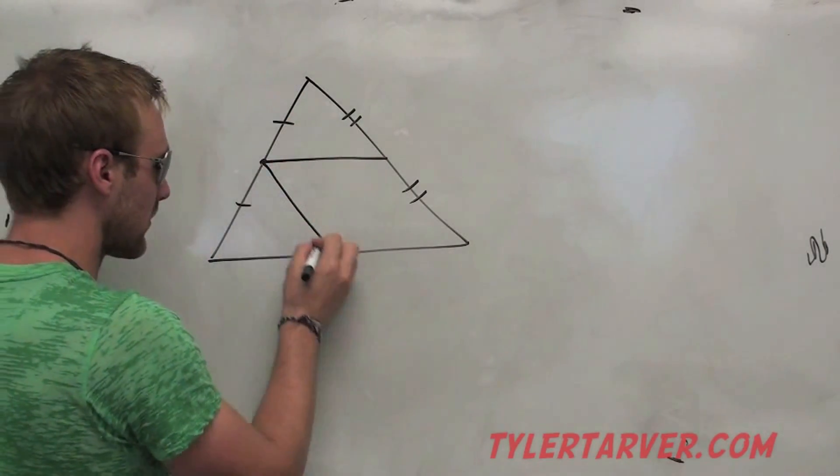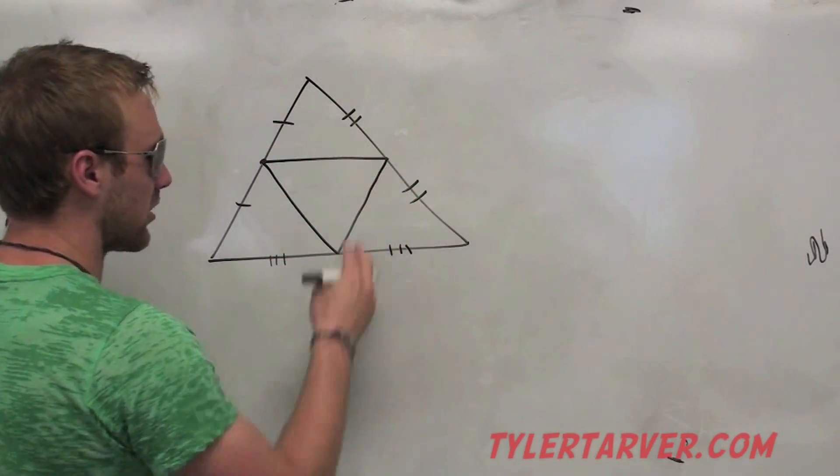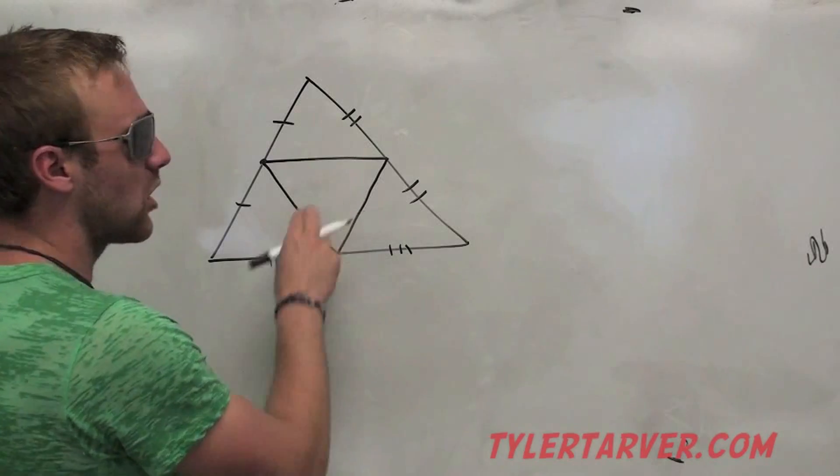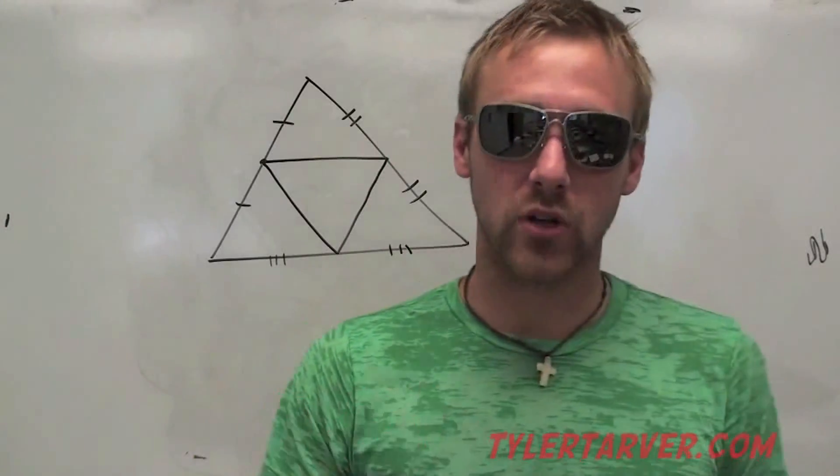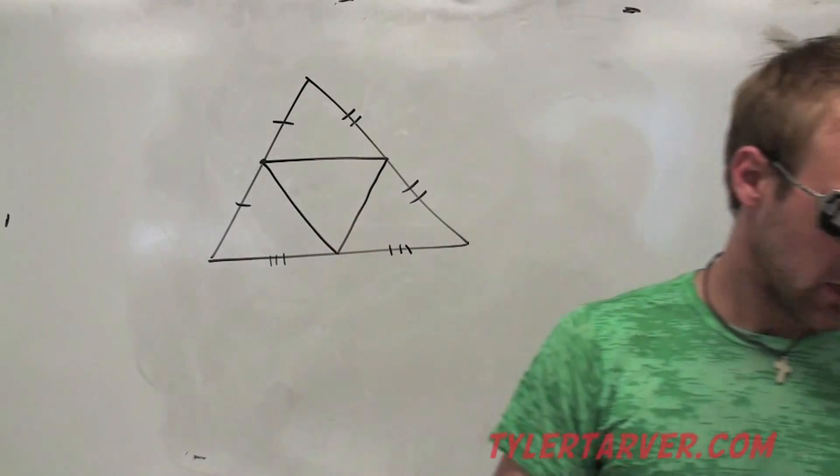Now, if we run that triangle mid-segment over here, where it cuts that in half, and then run this one to this one, goes midpoint to midpoint, that's called the mid-segment triangle. Because it's in the middle, it hits all the mid-segments, and it forms a triangle.